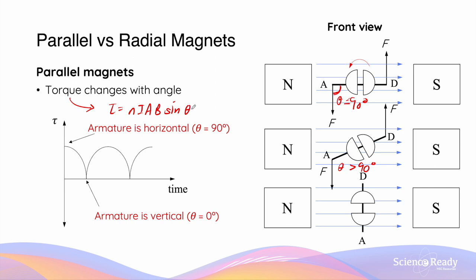This can be better represented on the graph. The torque is the highest at the beginning when the armature's plane is horizontal — this is when the angle is 90 degrees. It decreases until the armature reaches its vertical orientation, whereby there will be no current flowing through the armature, so the torque is zero at this given instance. After this vertical orientation, the torque will start to increase again until it reaches the maximum value again when the armature returns to its horizontal orientation. This fluctuation in torque magnitude will repeat itself throughout the rotational motion of the armature.